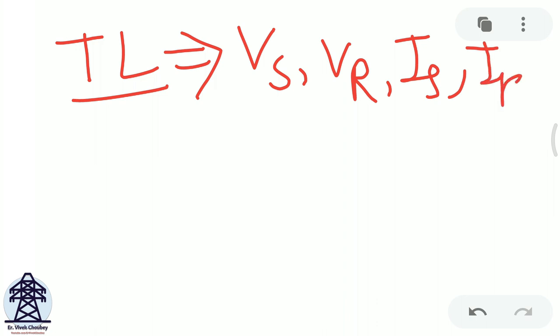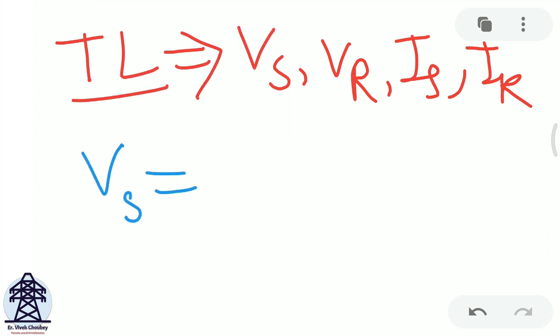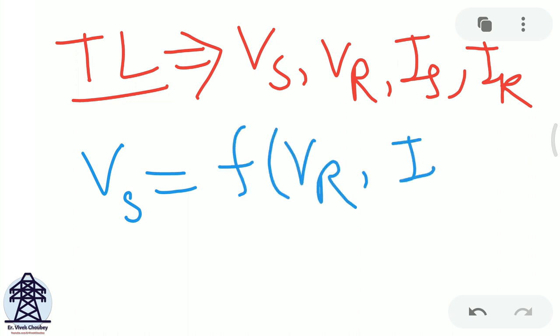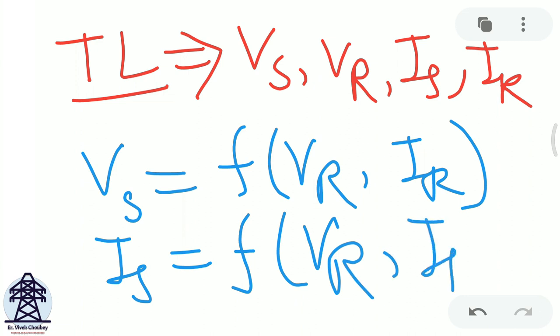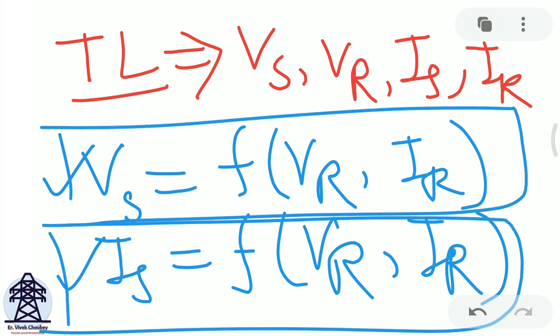These four factors are very important when talking about a transmission line. We want to form two equations: one relating the sending end voltage as a function of receiving end voltage and current, and another relating the sending end current as a function of receiving end voltage and current. This allows us to determine sending end power, receiving end power, power factors, active power, reactive power, and many other analyses.